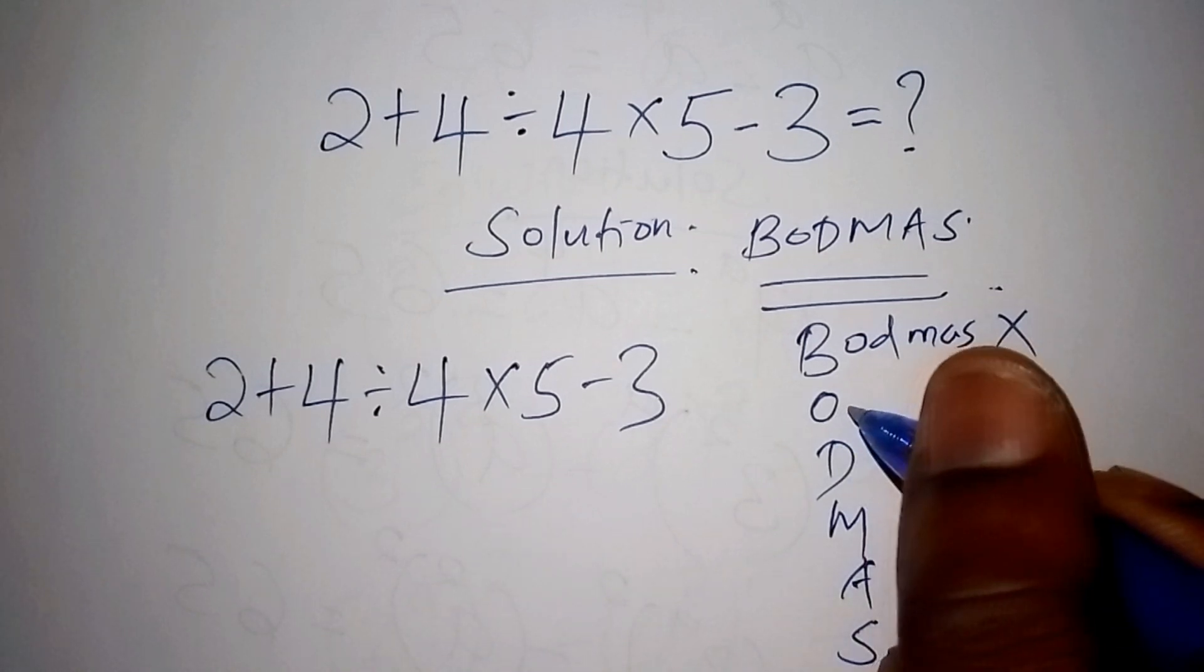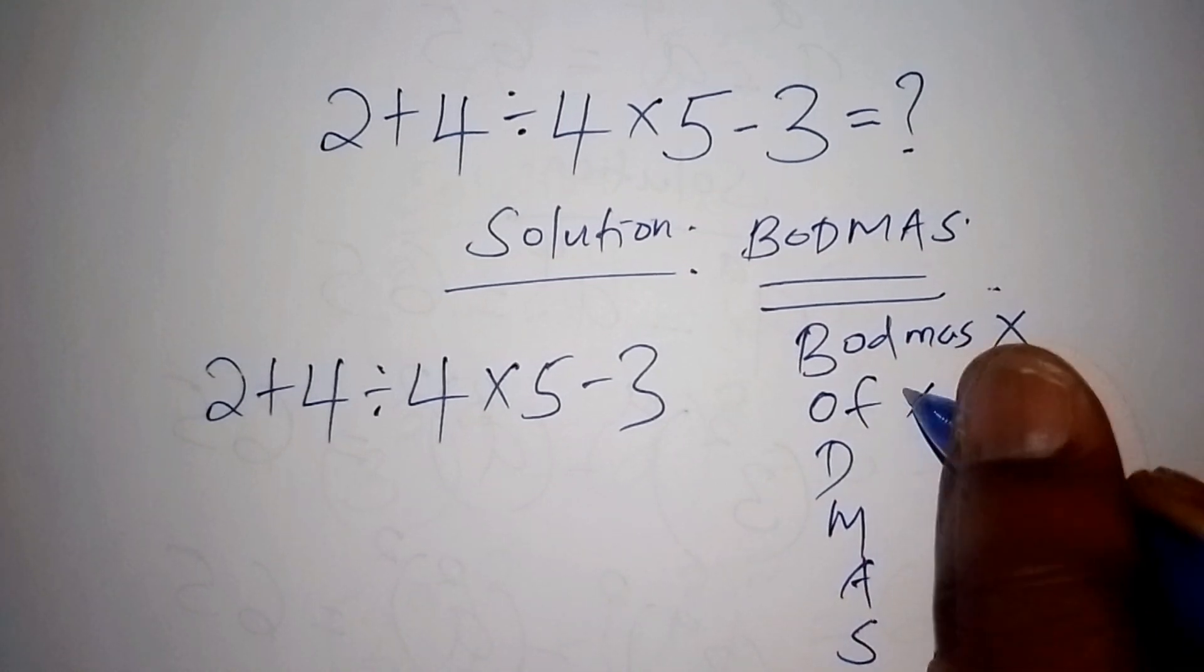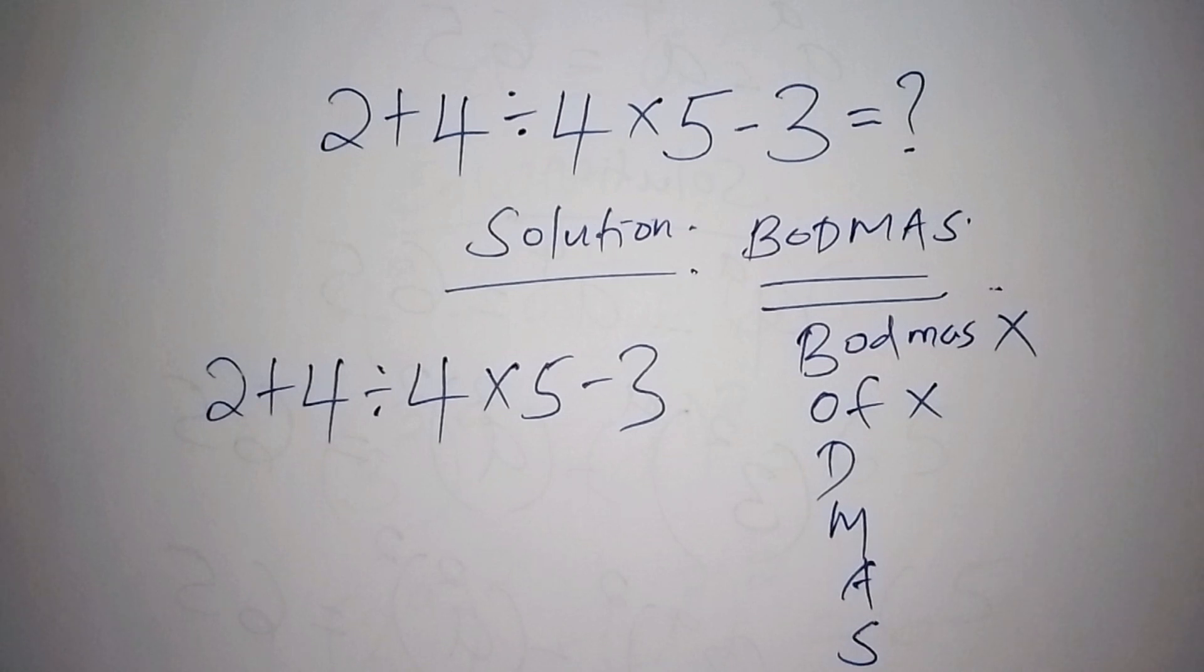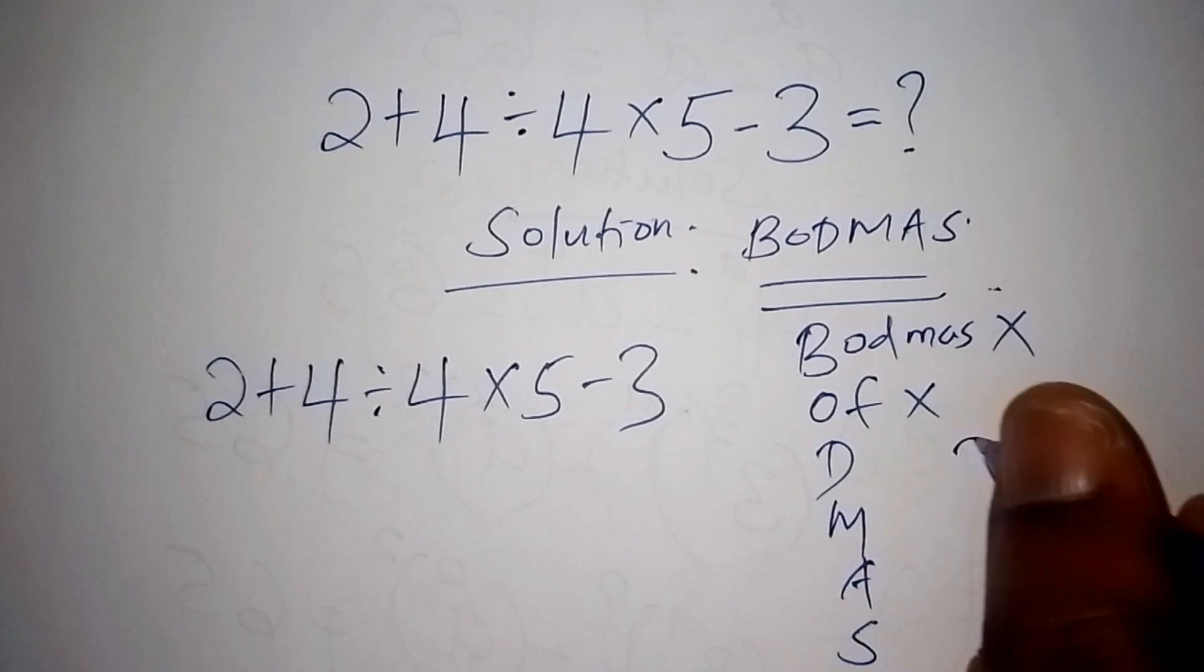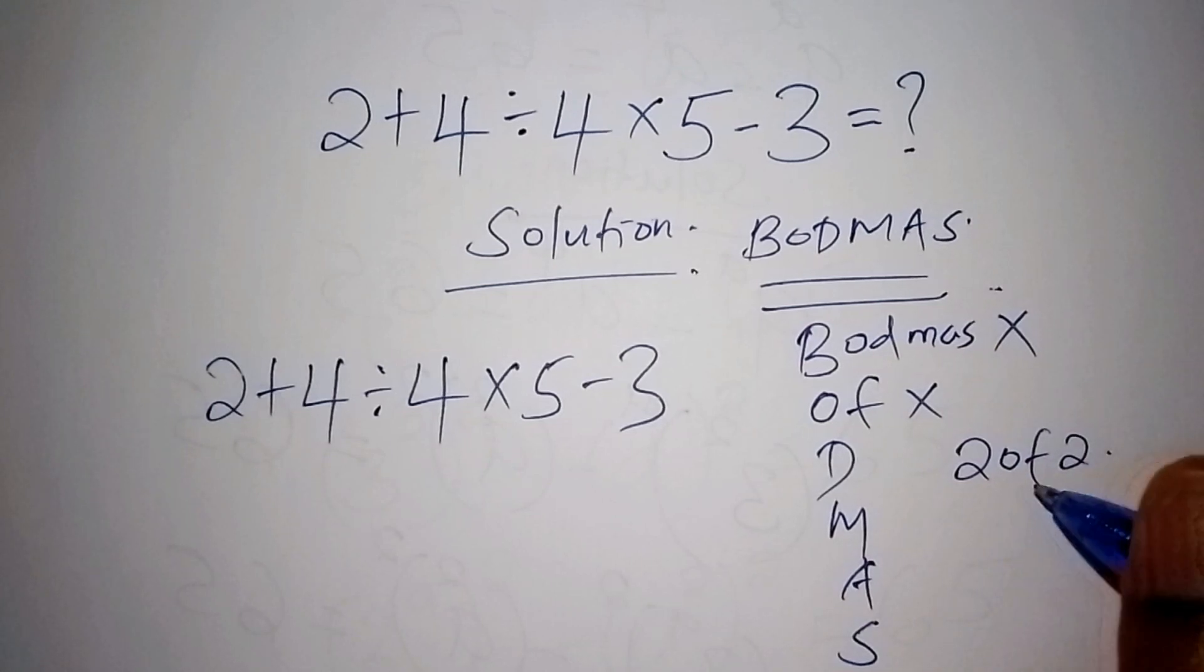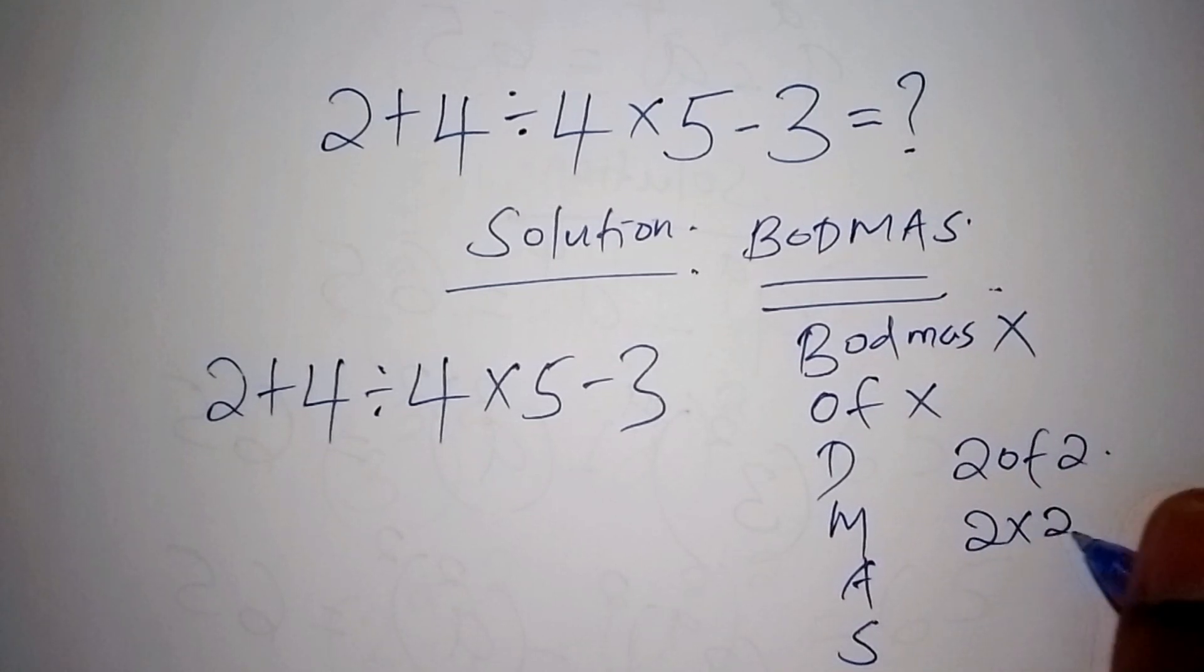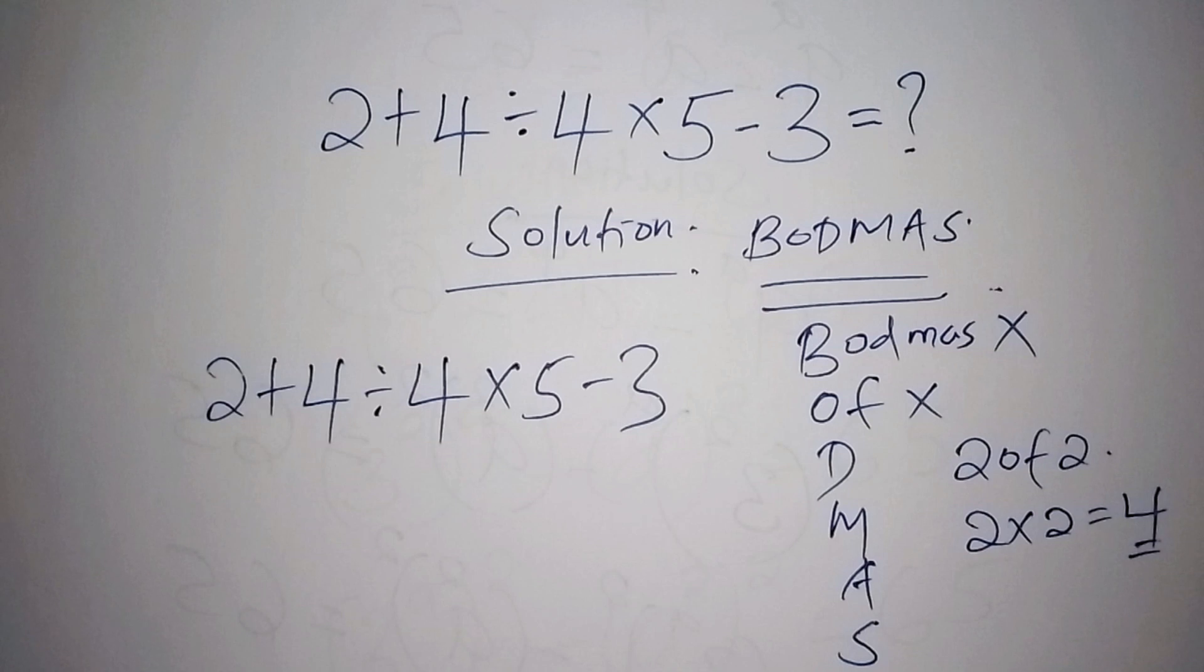So 'of' stands for multiplication. So we don't have an 'of', so meaning that we shall also mark the 'of'. Like for an example, when we have 2 of 2, this means that we shall multiply 2 times 2 and our final answer shall be 4.